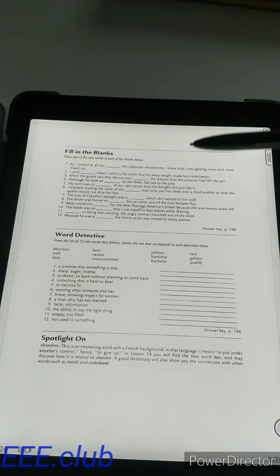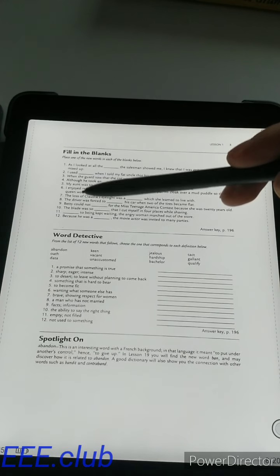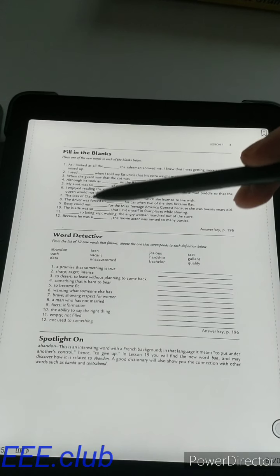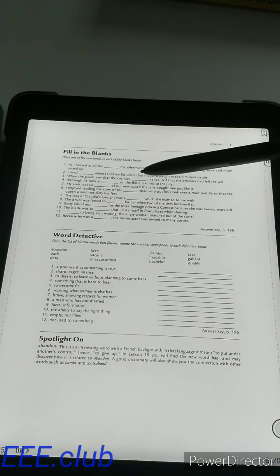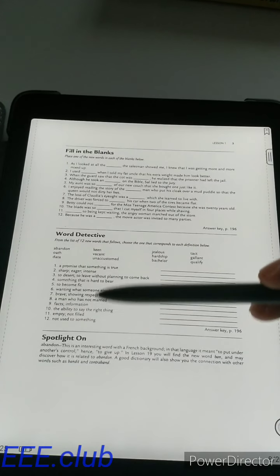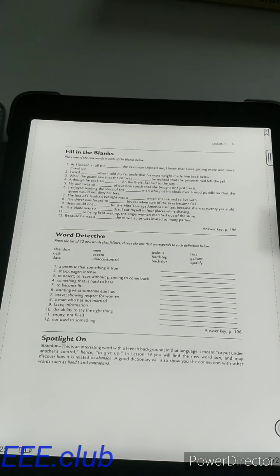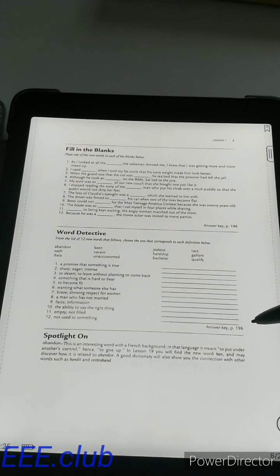Then there are the exercises. Fill in the blanks. You have 12 words and 12 blanks so you have to match the word with the blank according to the context. Here Word Detective is giving you 12 definitions and you have to match the definition with the words that you have just learned. To check whether your answers are correct or not, there is the answer key on page 196.